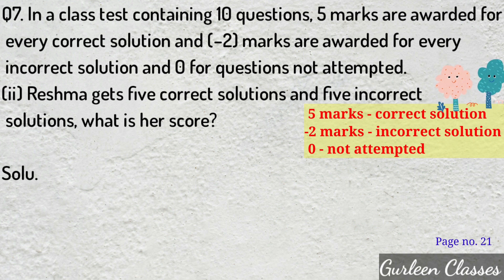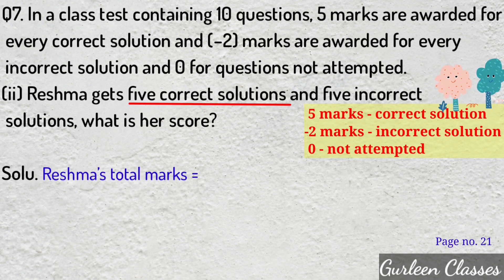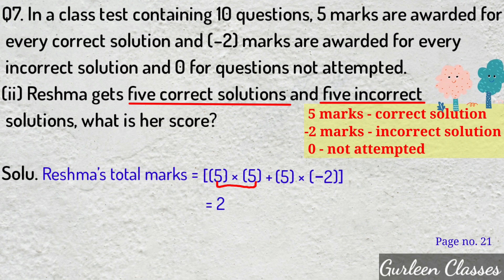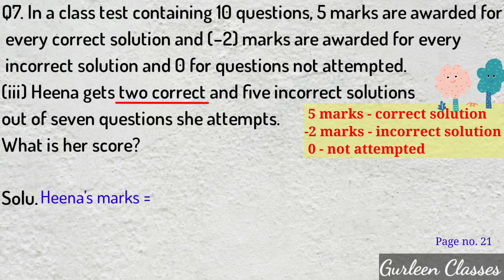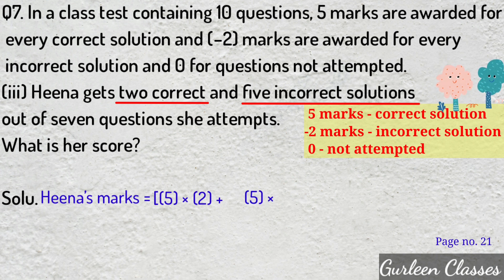Part 2 — Reshma gets 5 correct and 5 incorrect solutions. Reshma's total marks: 5 into 5 plus 5 into minus 2 equals 25 plus minus 10 equals 25 minus 10 equals 15.